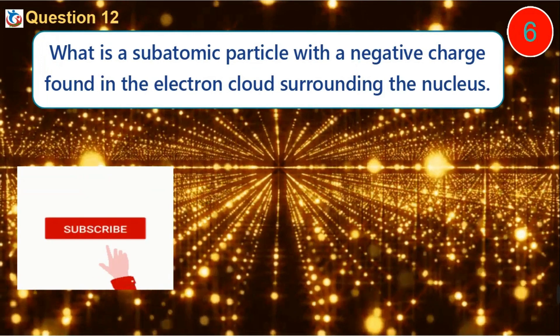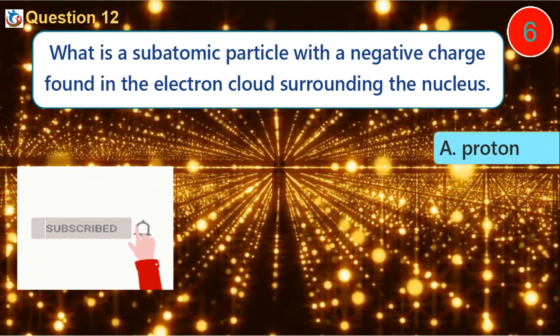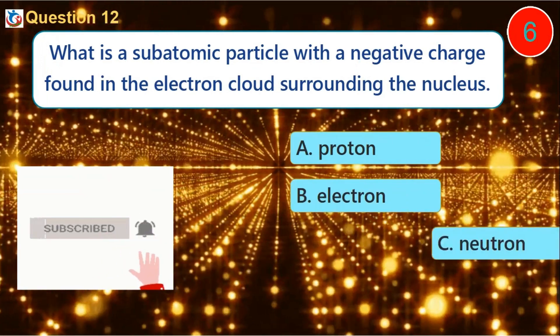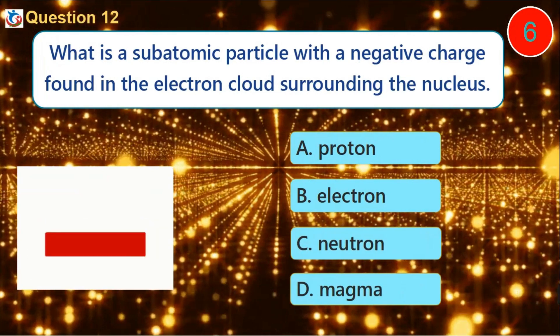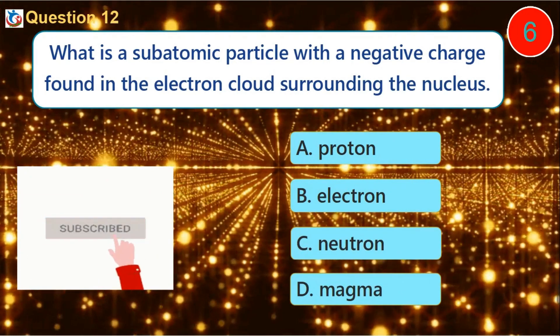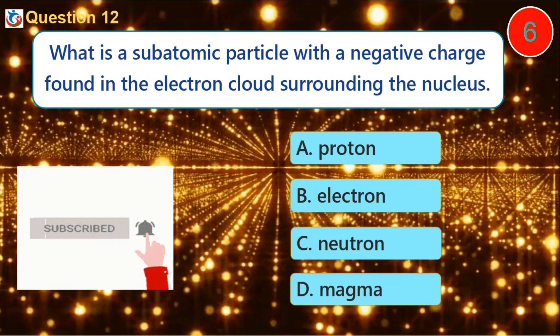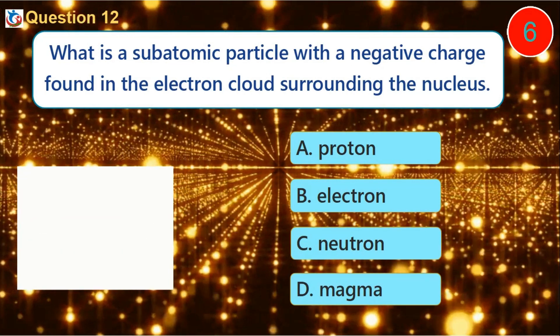Question 12. What is a subatomic particle with a negative charge found in the electron cloud surrounding the nucleus? A. Proton B. Electron C. Neutron D. Magma